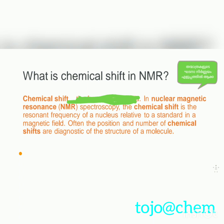What is meant by chemical shift in NMR? In magnetic resonance, that means in nuclear magnetic resonance spectroscopy, the chemical shift is the resonance frequency of a nucleus relative to a standard in a magnetic field. Often the position and number of chemical shifts are diagnostic of the structure of a molecule. We will call it the molecular shift.